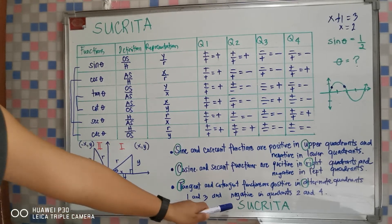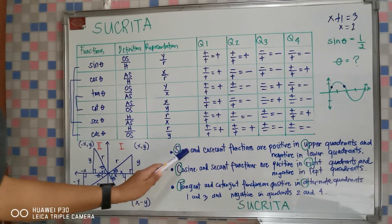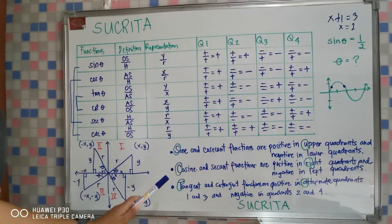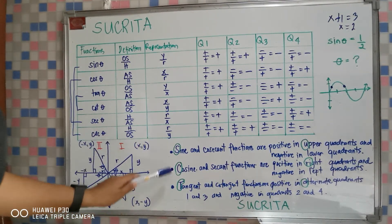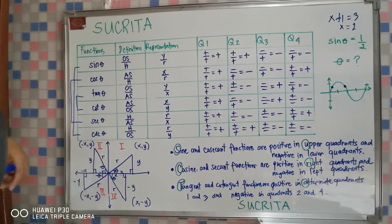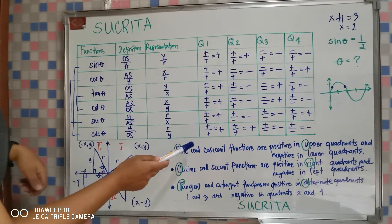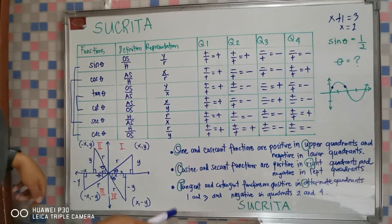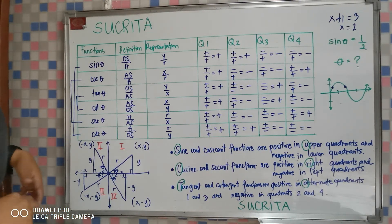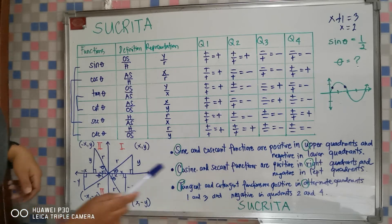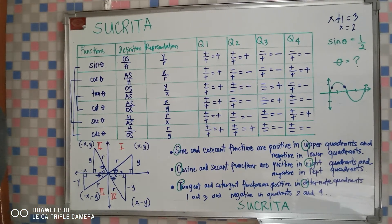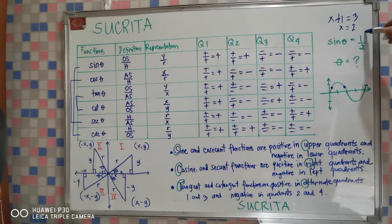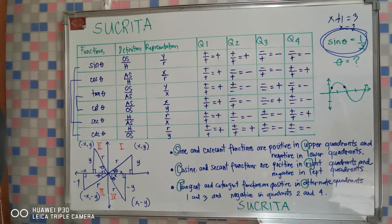This is where we derive our mnemonic device, Sukrita. We focus on the first three primary functions because the reciprocals will follow. Sine is positive in the upper quadrants and negative in the lower quadrants. Cosine is positive in the right quadrants but negative in the left. Tangent is positive in alternate quadrants 1 and 3, but negative in 2 and 4. I hope Sukrita is easy to memorize, because it is very important in identifying in which quadrants a trigonometric function is positive. For example, sin θ = 1/2 means the function value is positive, found in upper quadrants 1 and 2.